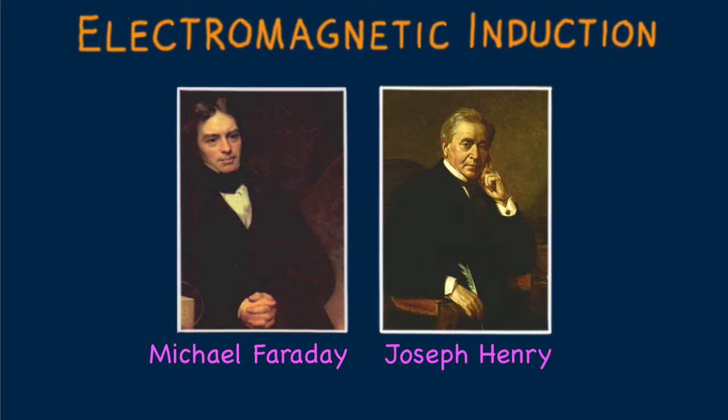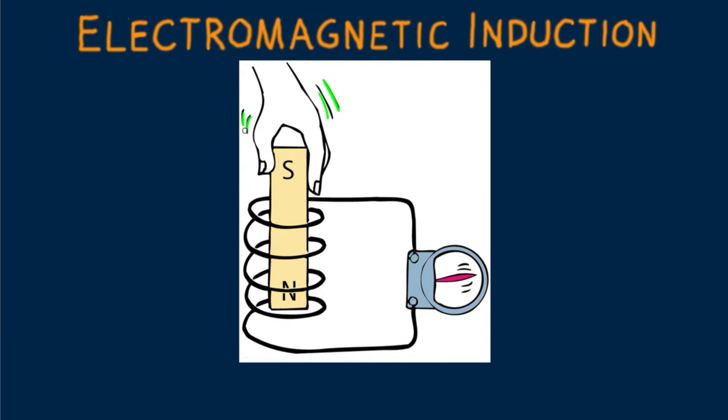Both, without knowledge of the other, found that when a magnet was moved into a coil of wire, an electric current was established in the wire. The current was momentary, occurring only when the magnet was in motion. This was astounding,